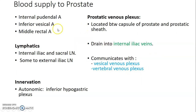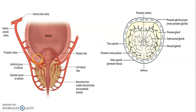The prostate is supplied by the internal pudendal artery, inferior vesical artery, and middle rectal artery. Its lymphatics drain into internal iliac and sacral lymph nodes as well as external iliac lymph nodes. The prostatic venous plexus is located between the prostatic capsule and the sheath and usually drains into internal iliac veins, communicating with the vesical venous plexus of the bladder and the vertebral venous plexus. The prostate is innervated by the autonomic nervous system through the inferior hypogastric plexus. You can appreciate the inferior vesical artery from the internal iliac coming to supply the prostate. This is the false capsule and then the true capsule, within which you find the prostatic venous plexus.